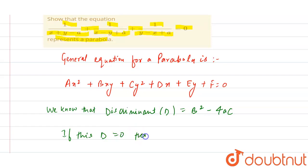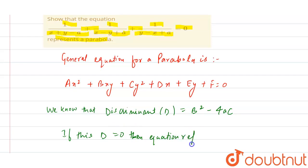We know that the discriminant D equals B² minus 4AC. If this D equals 0, then the equation represents a parabola. So if the value of B² minus 4AC equals 0, the equation represents a parabola.